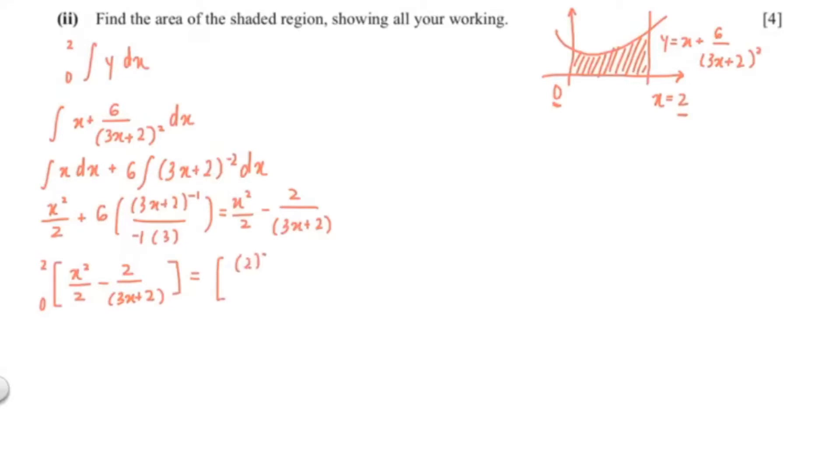And because this is a definite integration, you would just put in your x values. And that would be 2 minus 1 over 4 minus negative 1, which is 2 minus 1 over 4 plus 1, giving us 11 over 4, which I'm going to write as a decimal.